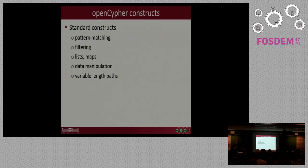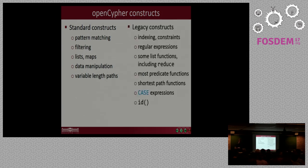So, OpenCypher actually defines a smaller subset of the Cypher query language, but it still allows you to do many interesting things. You can do almost all of the pattern matching stuff that you can do in a normal Neo4j Cypher. You can do your filtering operations. There are collections like lists and maps. There are operators for data manipulation and also more advanced constructs like variable length paths.